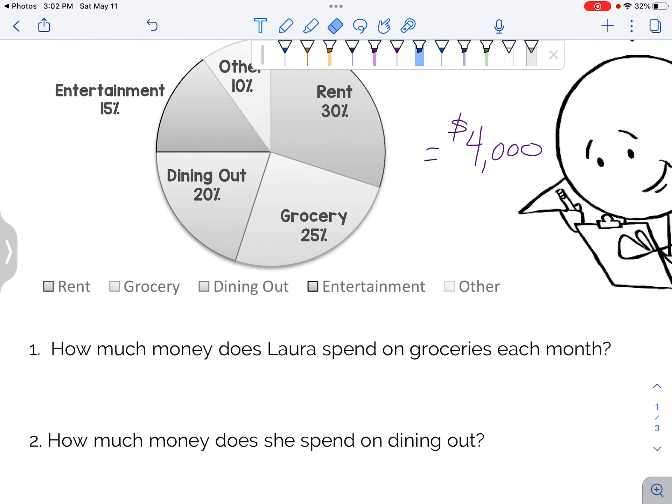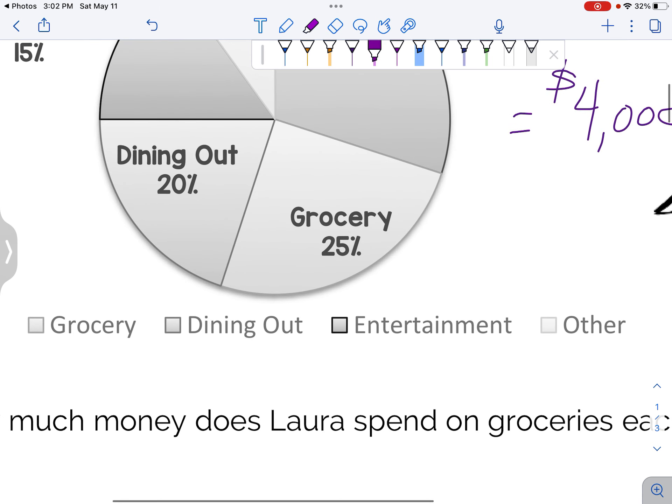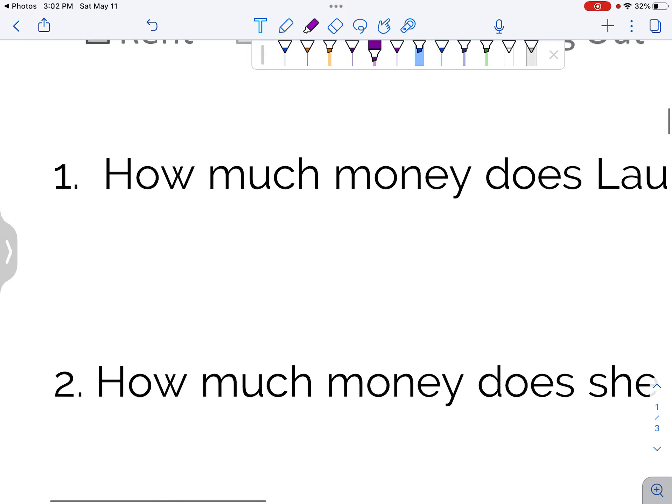Question number one. How much money does Laura spend on groceries each month? So here's our groceries, or here's her groceries, and that's 25%. So we're going to say 25% of $4,000.